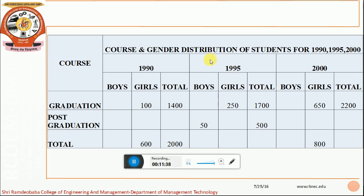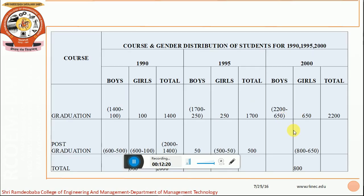Similarly, for the year 1995, the number of graduates increased to 1700, out of which 250 are girls. The number of PG students fell to 500, out of which only 50 are boys. For the year 2000, out of 800 girls, 650 are for graduation, the total number of graduates is 2200, and the number of girls and boys are the same for PG classes.